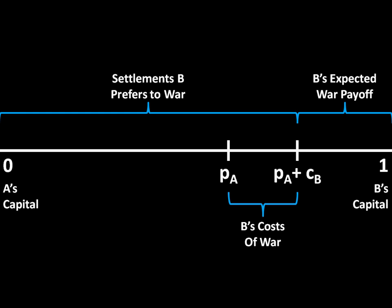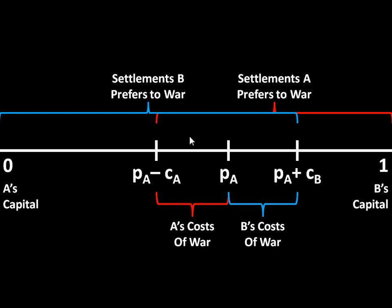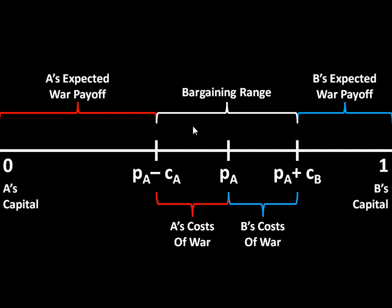Now, if we overlap A's and B's settlements that they prefer to war, you see an overlap. Anything in this range is mutually preferable to war — both A and B prefer settlements in here over rejecting the settlement and fighting a war. We call this interval the bargaining range. These are the set of settlements that both A and B would prefer to war, and they always exist because these costs are positive. So anything in between PA minus CA and PA plus CB is mutually preferable to war. When states are bargaining over issues, we expect them to settle in this range, which is determined by three things: the probability of victory, the cost to one side, and the cost to the other side.